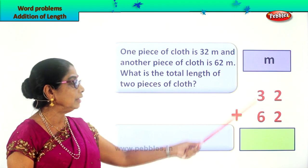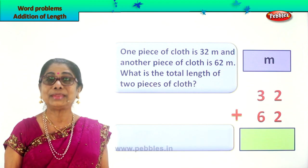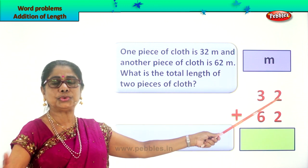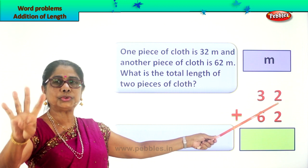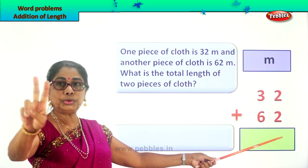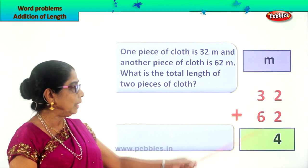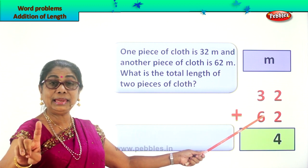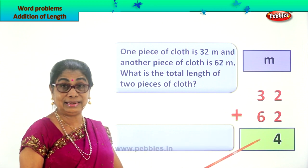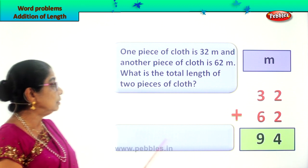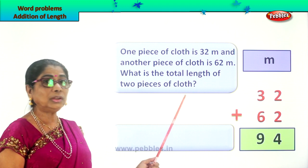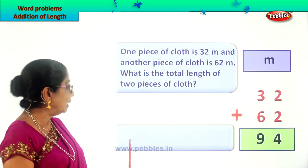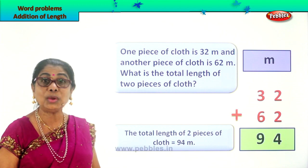Now we are going to find the total length of the two pieces of cloth. Shall we add them together? Only when we add can we get the total length. It's an addition problem. First, 2 plus 2 is 4. Then we have 3 plus 6. What is 3 plus 6? 6 plus 3 is 9. That is 94 meters. So the answer is: the total length of two pieces of cloth is equal to 94 meters.